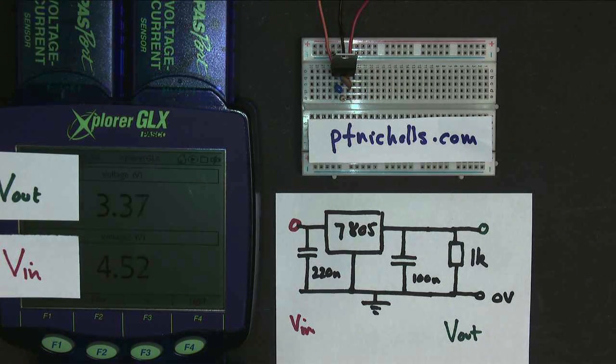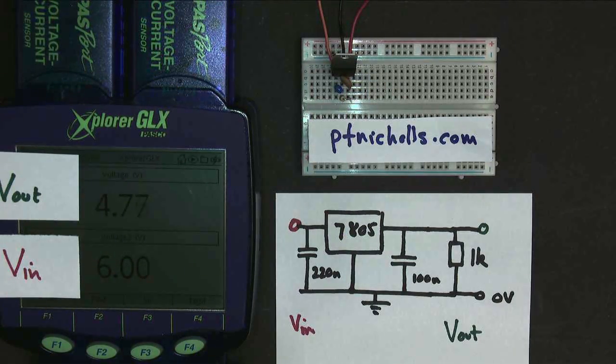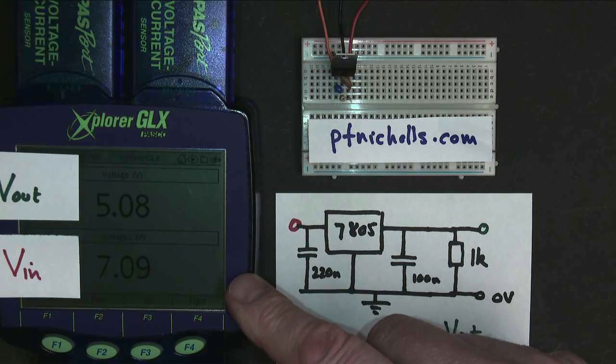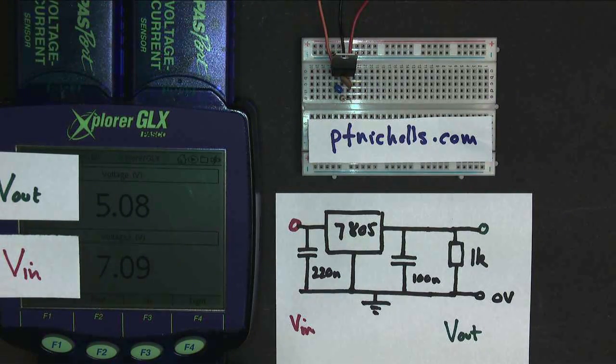And I keep going higher and higher. And when I get to about 6 volts, the output voltage is still not quite 5 volts. And it's still rising. But now, when I get to 7 volts, the output voltage is 5.1 volts almost. And it's fixed.